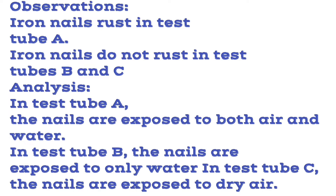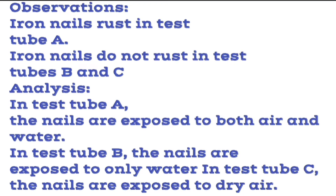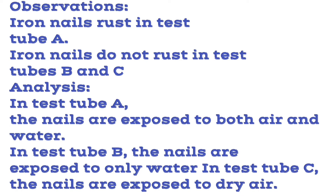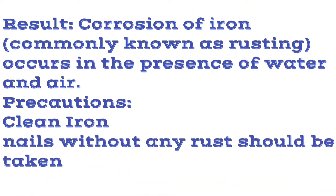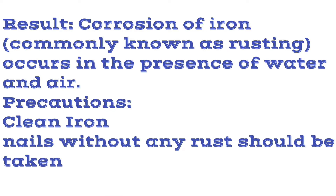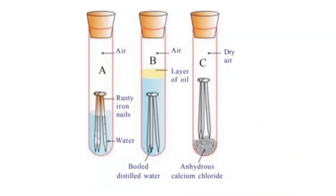Observation: iron nails rust in test tube A, while iron nails in test tubes B and C do not get rusted. In test tube A, nails are exposed to both air and water. In test tube B, nails are exposed to only water. In test tube C, nails are exposed to dry air only. Result: corrosion of iron (rusting) occurs in the presence of both water and air. Precaution: clean iron nails without any rust should be taken.